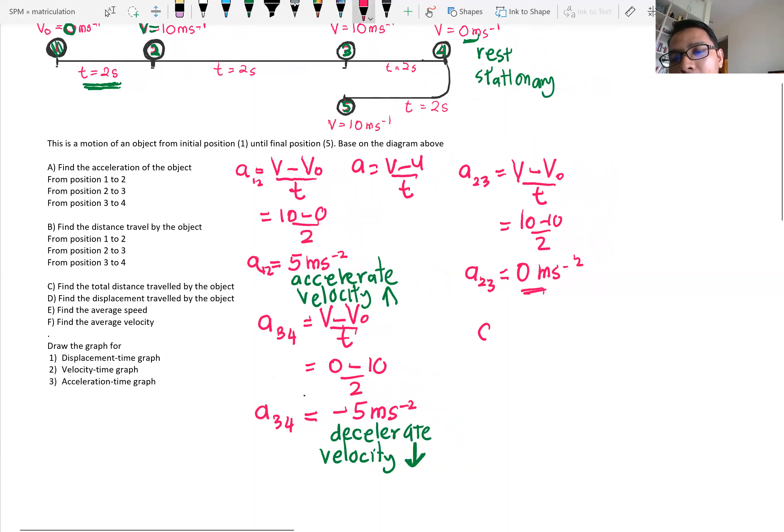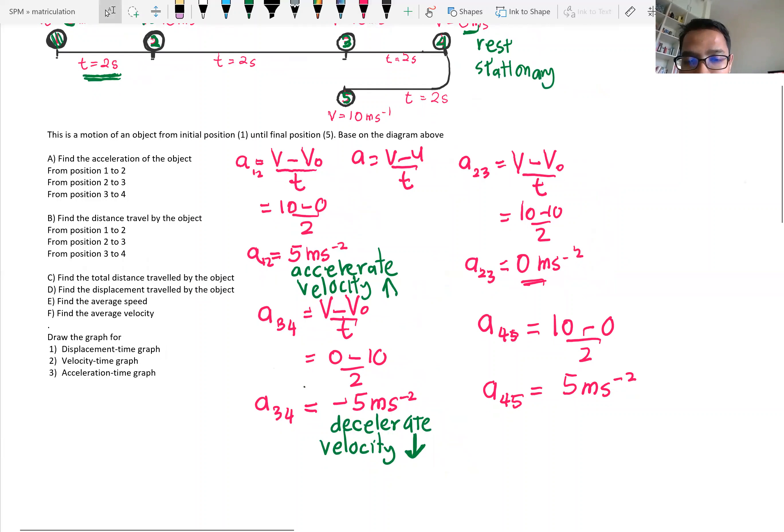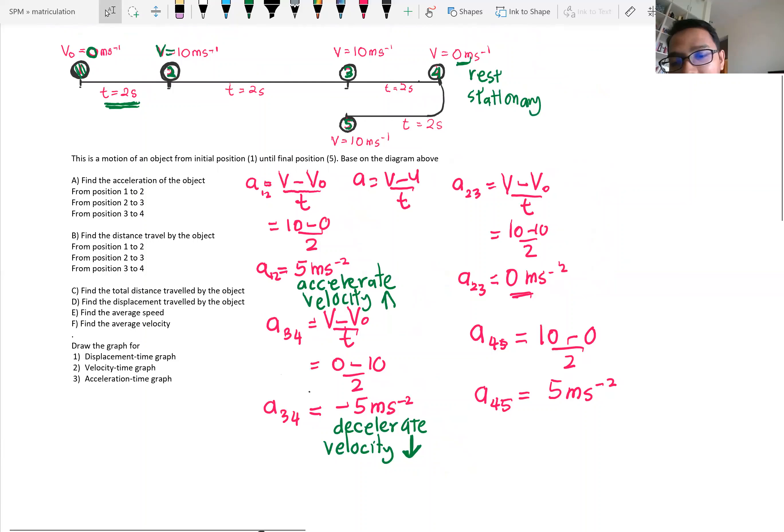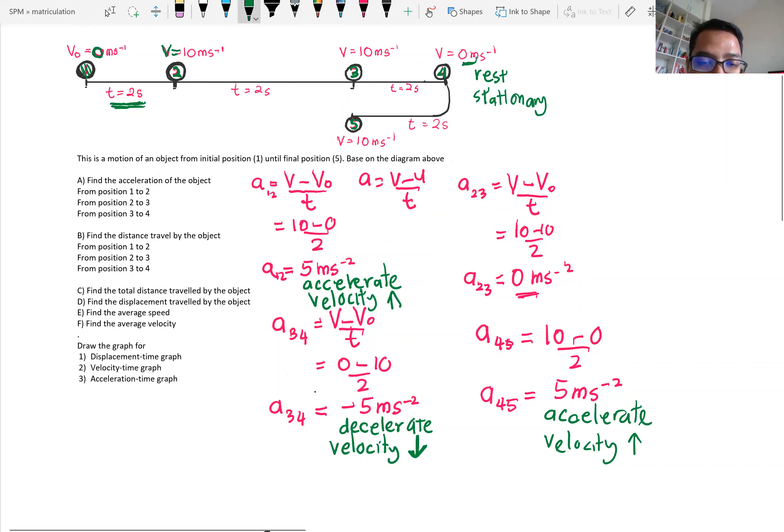Next, from number 4 to number 5, so 10 minus 0 divided by 2, so from 4 to position 5, still you get 5 ms⁻². Even though the direction is changing, it moves back, but it still gets the positive value because it is accelerated. And the velocity is increased, even though the direction is changing. This is important for you to understand.